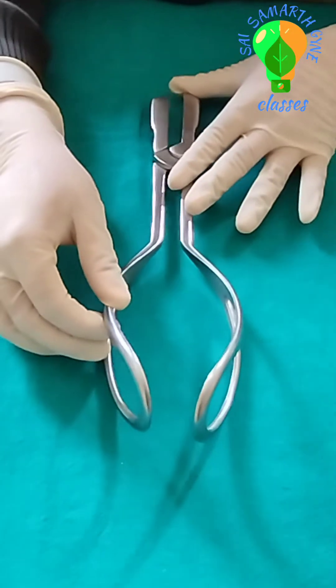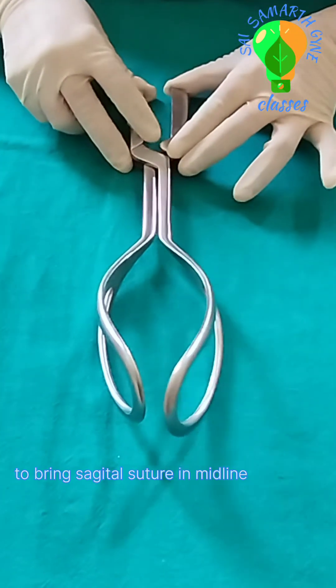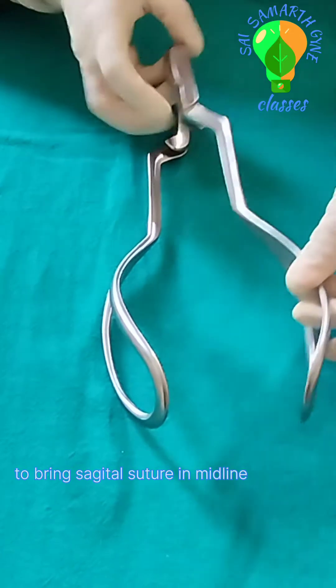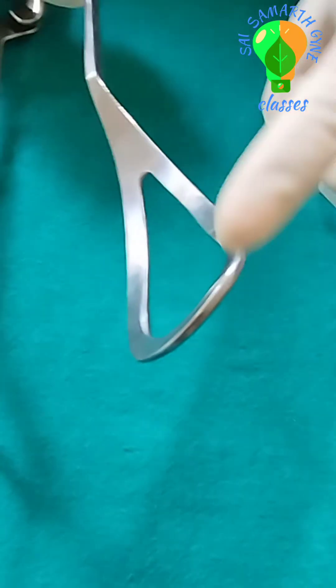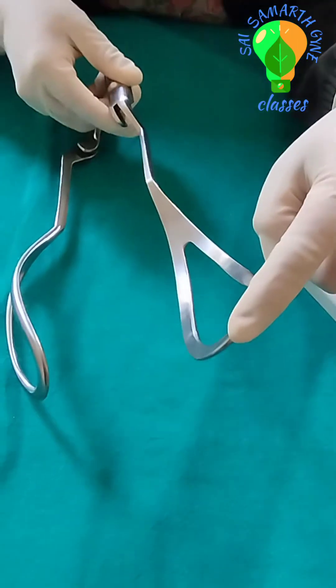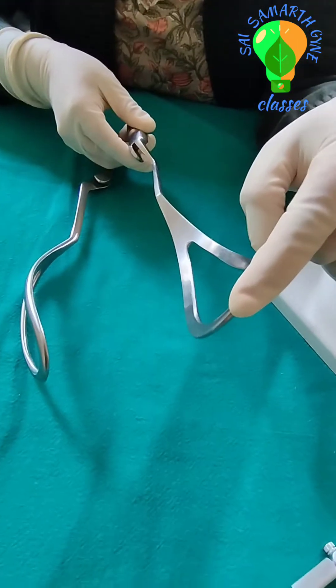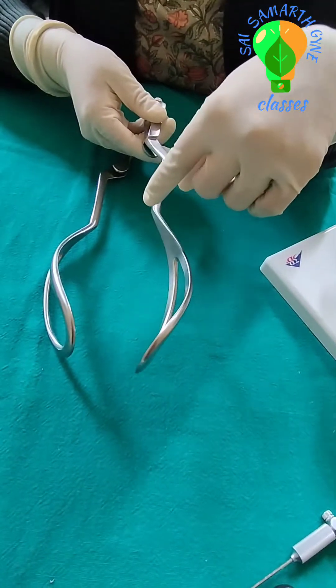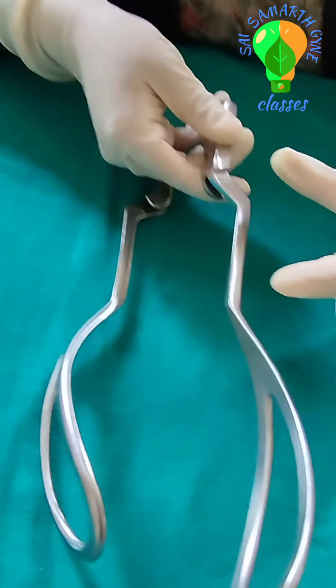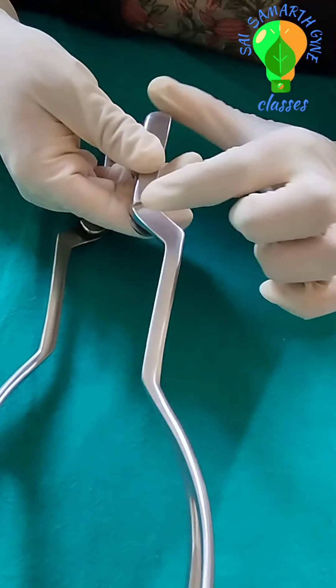Here you can see the parts of the outlet forceps. This perforated portion is the blade. This is the toe of the blade. Here, this is the heel of the blade. This part is the shank and this is the handle.